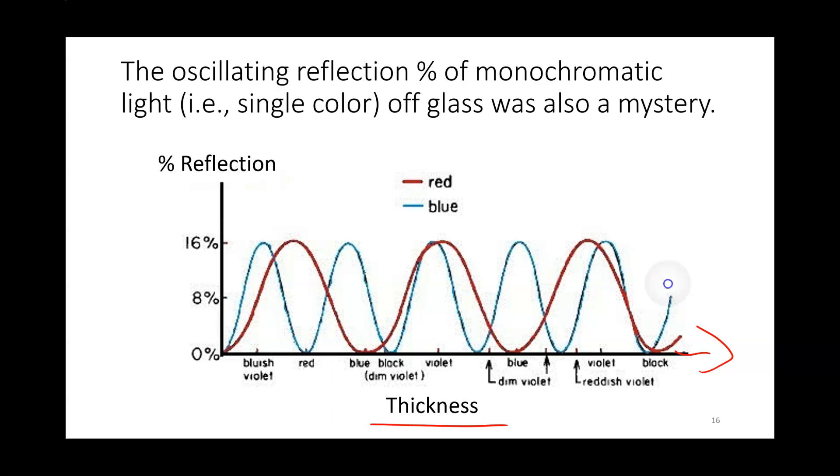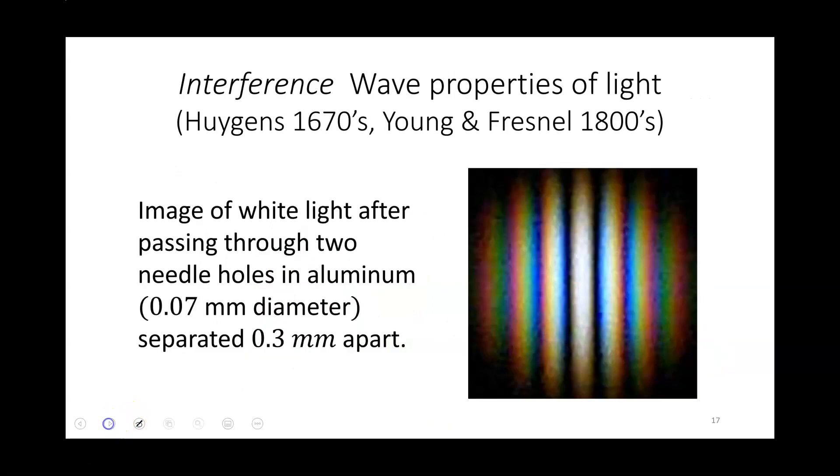Turns out at the same time as Newton there was another guy, Huygens, in the 1670s who proposed a wave theory of light, but he wasn't as famous and no one really picked up on it. Later, in the early 1800s, Young and then especially later Fresnel, a French guy, came up with a theory of wave interference to explain a lot of phenomena that was coming up.